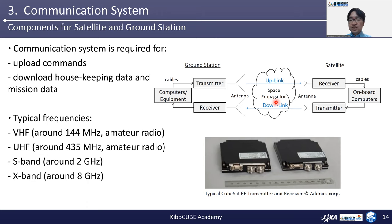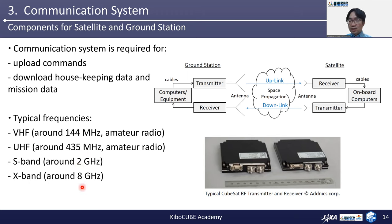The available frequencies are VHF around 144 MHz, and UHF around 435 MHz. These are in the range of amateur radio bands, and the satellite must have missions for public amateur radio users and public citizens. Note that S-band around 2 GHz and X-band around 8 GHz are used for satellites, especially larger than 3U or 6U CubeSats.